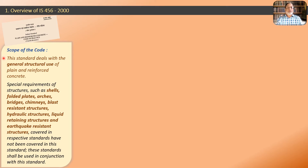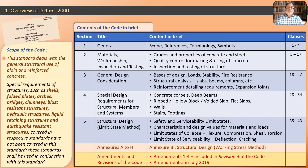IS 456 has 5 sections. Section 1 is a general section containing scope, references, terminology, and symbols. Section 2 is related to materials, workmanship, inspection, and testing.